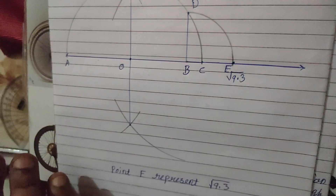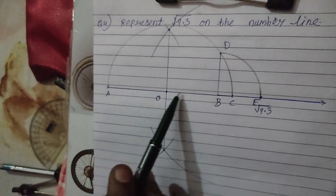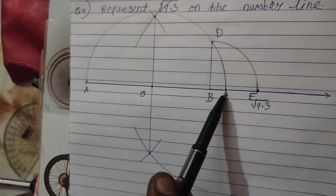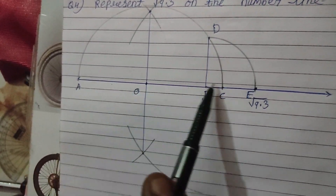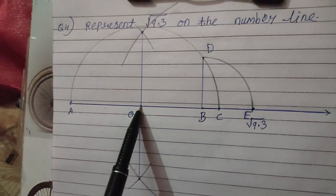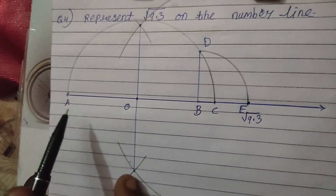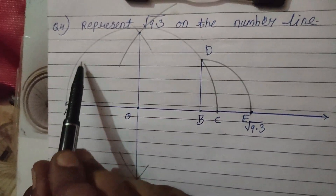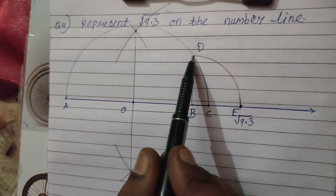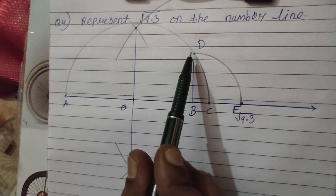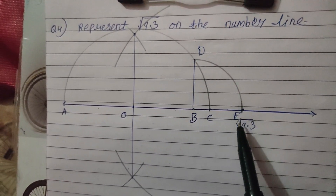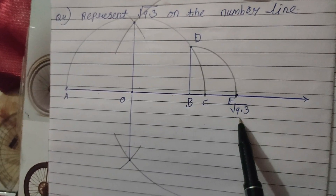Let me give a small revision. First, draw AB equal to 9.3. Then extend AB by 1 unit to reach C, giving AC equal to 10.3. Find the midpoint O of AC by drawing the perpendicular bisector. Taking AO or OC as radius, draw the semicircle. From point B, draw a perpendicular to meet the semicircle at D. Then with B as center and BD as radius, draw an arc to intersect the number line at point E, which represents square root of 9.3.